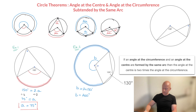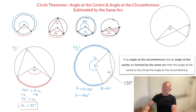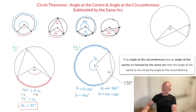Since A plus B must equal 360, we have A plus B equals 360. Since B is equal to 260, this becomes A plus 260 equals 360. To find angle A, we subtract 260 from both sides, which leads us to the answer A equals 100 degrees. And we're done.